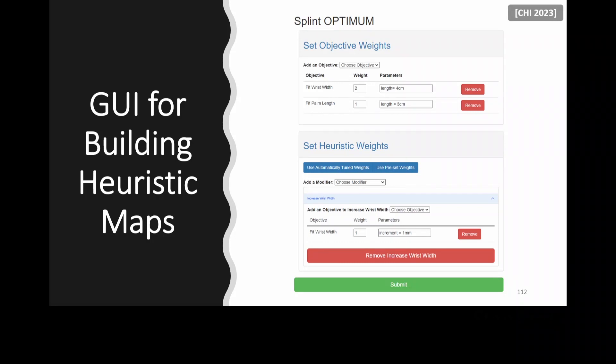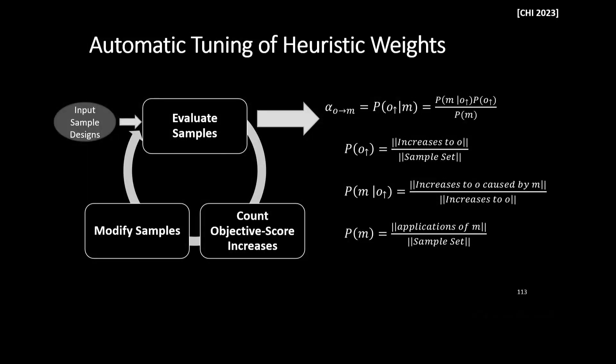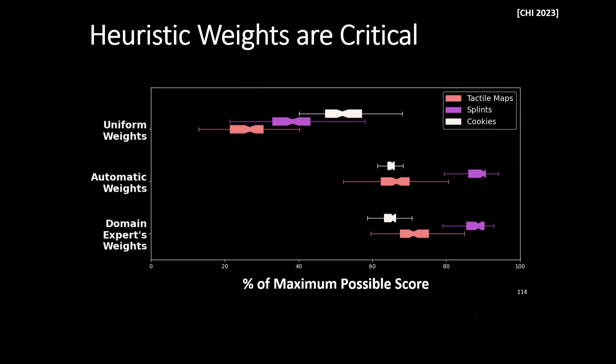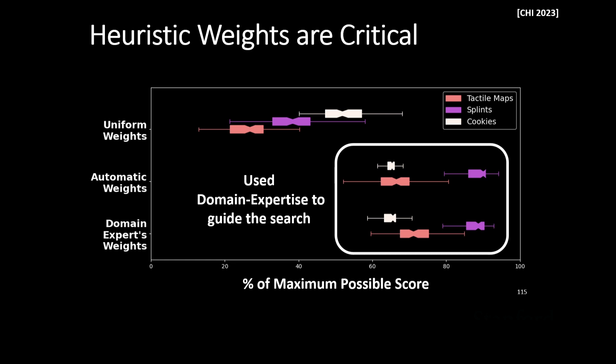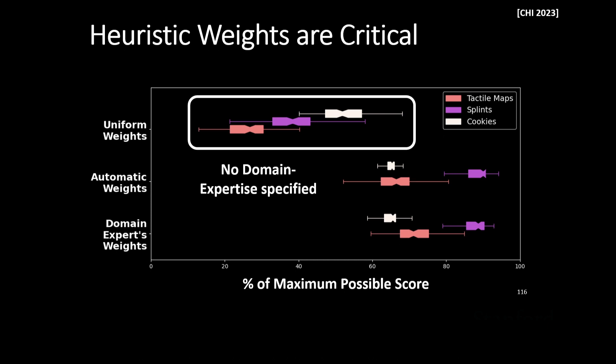Setting up heuristic maps in code might be overbearing for clinicians or people with disabilities, so we automatically generate an interface for them to iterate and modify heuristic maps, as well as an automatic tuning method where they input designs with objectives and modifiers applied and it generates heuristic weights. Crucially, when domain experts design the heuristic maps without programmer assistance, we get better results — designs created with automatically generated or domain-expert-specified weights converge on higher-scoring designs compared to uniform weights that give the optimizer no information about relationships between objectives and modifiers.